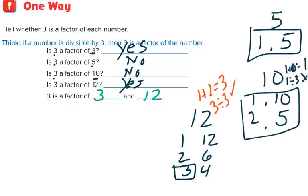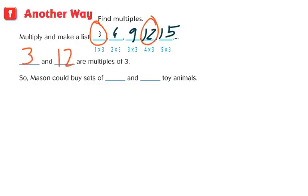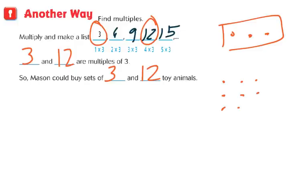Now let's look at another way to solve this: find multiples of 3. Multiples are like skip counting, so multiply and make a list: 3, 6, 9, 12, 15... Looking back at our set sizes, the only two multiples we see are 3 and 12. So 3 and 12 are multiples of 3. Mason could buy sets of 3 or 12 toy animals. If he bought 3, that's one row. If he bought 12, he would have had 4 rows of 3.